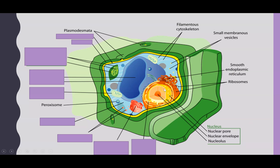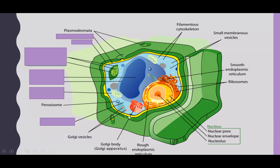This whole structure is our nucleus, split into two parts: we have the nucleolus, the nuclear envelope, and the pores within that envelope. Branching out of the nucleus we have the rough endoplasmic reticulum — we can tell it's rough because of those ribosomes attached to it. The slightly curved structure is the Golgi apparatus, and the vesicles branching off that are the Golgi vesicles.